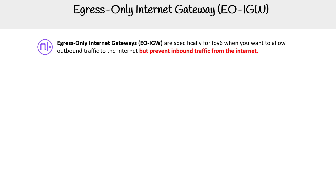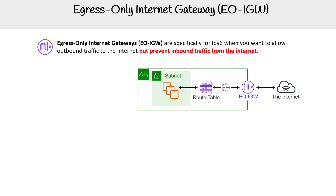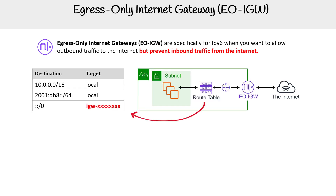Let's read the description here. The EO-IGW is specifically for IPv6, when you want to allow outbound traffic to the internet and prevent inbound traffic from the internet — I think my icon best represents that. You'd still have to add your route, so you want a route out to the internet for the IGW.